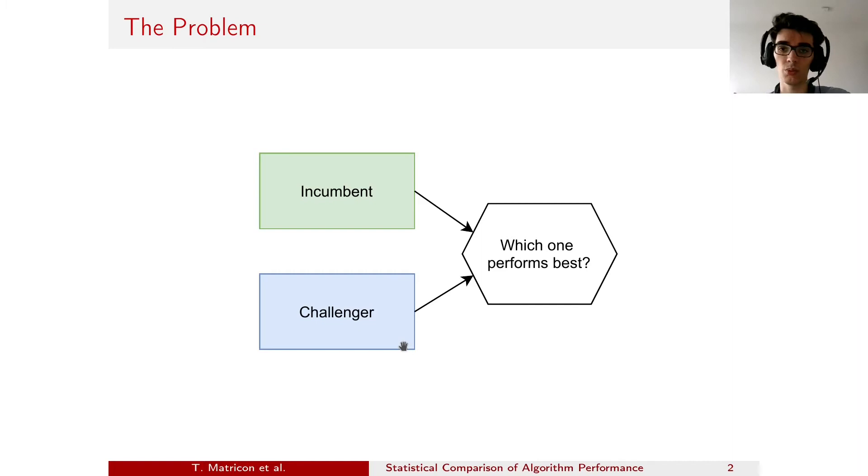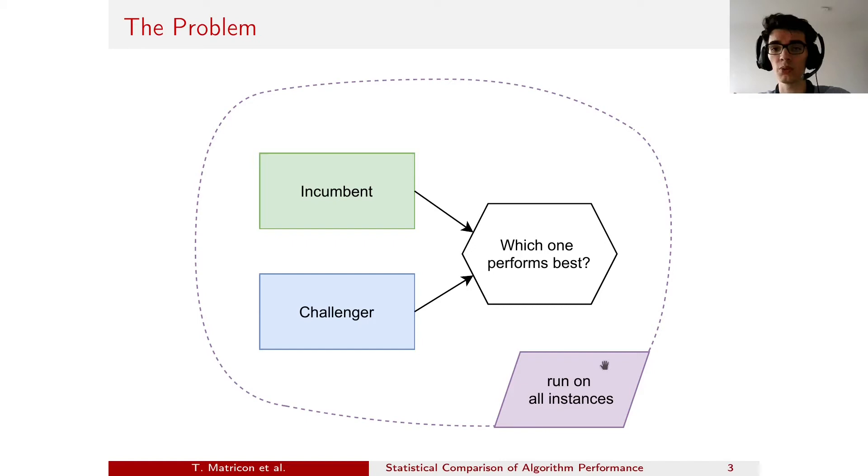To do this comparison, what we would naturally do is run the challenger on all of the instances to compare it with the data of the incumbent. But this is quite costly. Instead, we can handpick or select randomly some instances, and then run the challenger on that subset of instances.